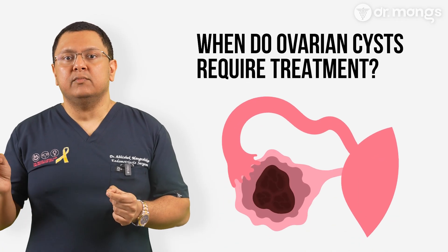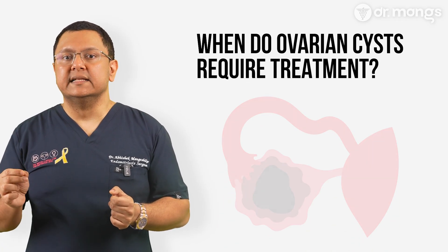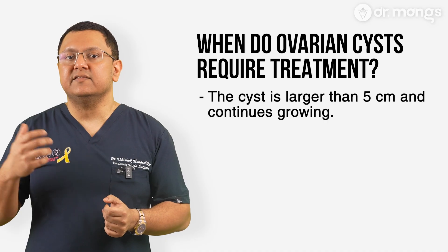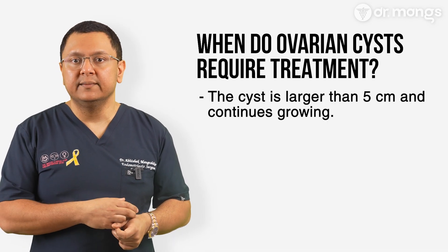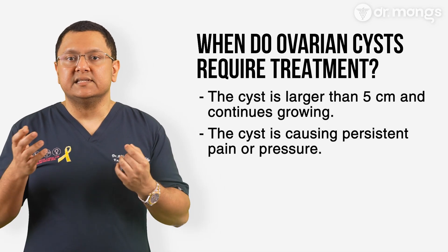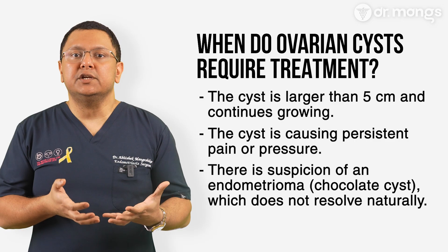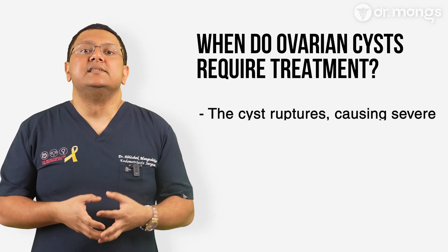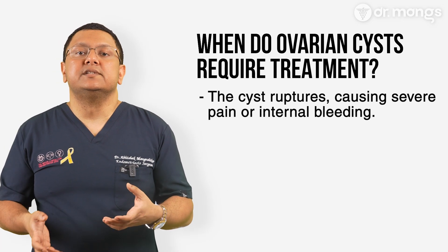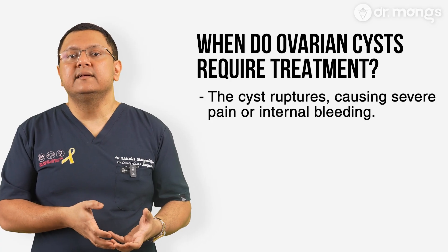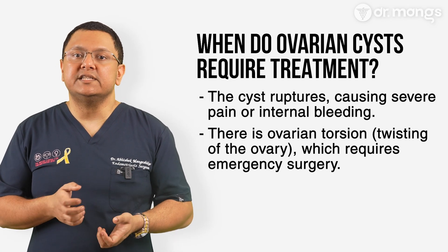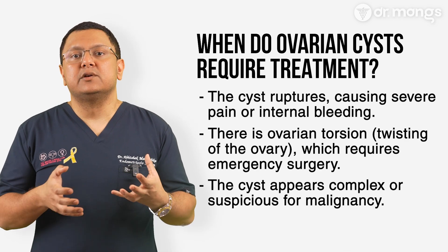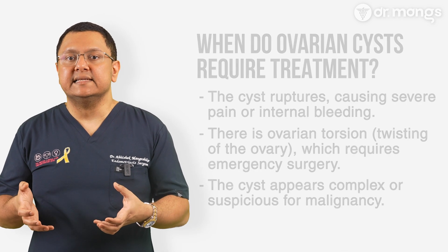Most ovarian cysts are small and resolve on their own within a few months. However, treatment may be needed if the cyst is larger than 5cm and continues growing, or if it is causing persistent pain or pressure, there is suspicion of an endometrioma or chocolate cyst which does not resolve naturally, the cyst ruptures causing severe pain or internal bleeding, there is ovarian torsion requiring immediate emergency surgery, or the cyst appears complex or suspicious for malignancy.